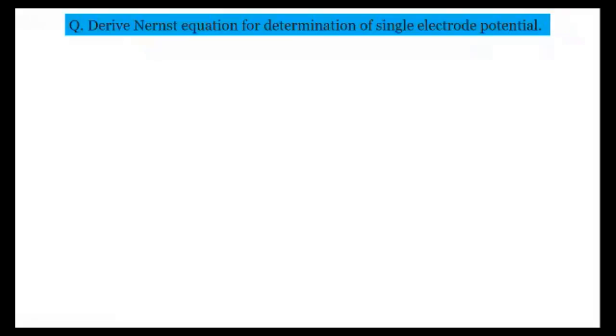We have to talk about the Nernst equation for the single electrode potential — we have to derive the Nernst equation for determination of single electrode potential. As you know, in electrochemistry we use a cell, which consists of two half-cells meaning two different electrodes. We have to derive the Nernst equation to find out the EMF or potential difference across this particular cell.